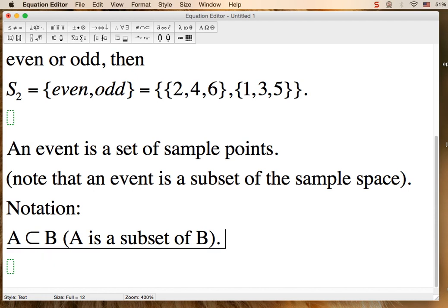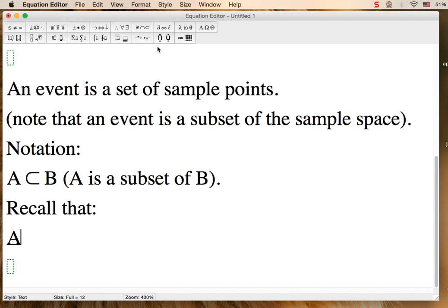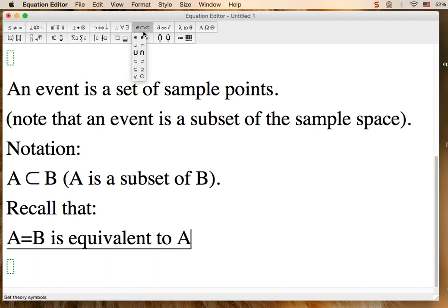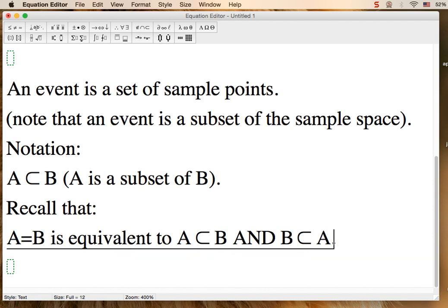Now, remember that if you want to show that A and B are equal, what you have to show is that A is a subset of B and that B is a subset of A. When you have those two conditions satisfied, then you get to say that A equals B. Recall that A=B is equivalent to A ⊂ B AND B ⊂ A.